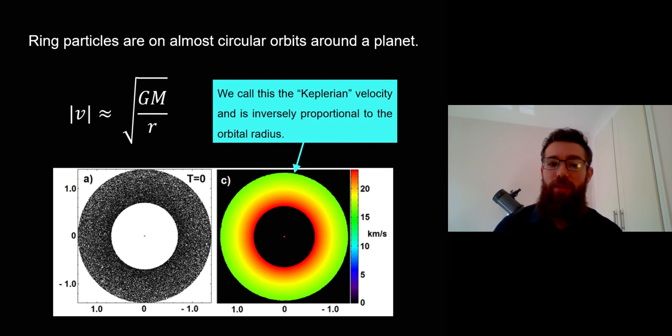We call it a Keplerian velocity, but also if you think about all those particles together it's also kind of a Keplerian shear or shearing flow. The closer particles are orbiting faster than the ones outside, so it causes this kind of shearing motion which actually gives a lot of the structure we see in Saturn's rings.